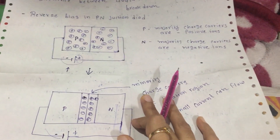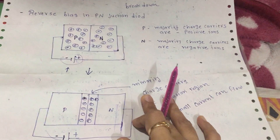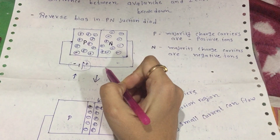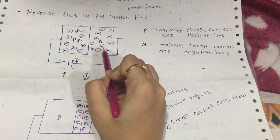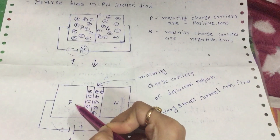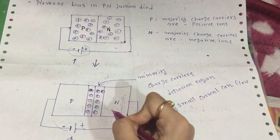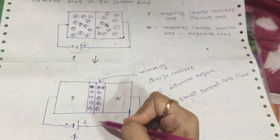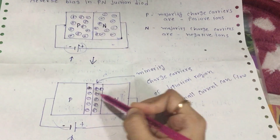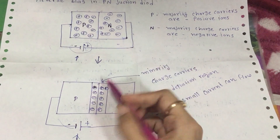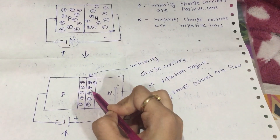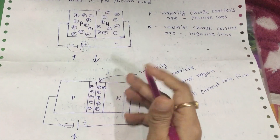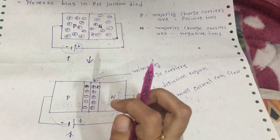In zener breakdown, the PN junction diode is heavily doped, meaning the impurities in both P-type and N-type materials are higher. Because of this, the depletion region increases — there are more negative and positive charges on each side. When the depletion region increases to a critical point, it breaks down, and electrons and holes bond with each other, causing current to flow.